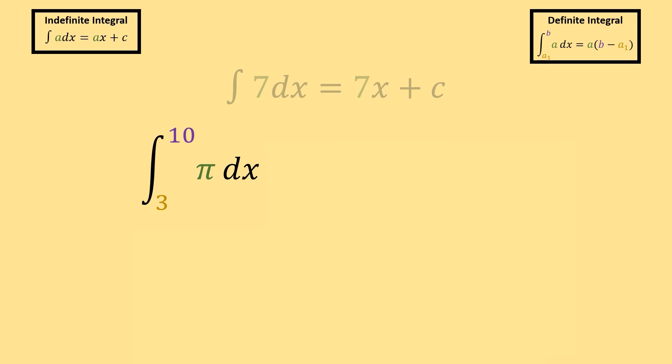Let's do another one. Say, I wanted to take the integral from 3 to 10 of pi dx. So, pi is our constant, we're integrating with respect to x, and our bounds are 3 to 10. So, I can use the definite integral over here to jump to our final answer, which will be pi times 10 minus 3, which is then just pi times 7, or we can rewrite that as 7 pi.